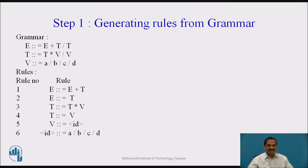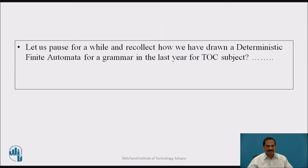For an example, let us take a grammar: E gives E plus T or T; T gives T into V or V; V gives A or B or C or D. From this context-free grammar in normal form, we see that it produces six rules which are the alternatives of the rules indicated in the grammar above.